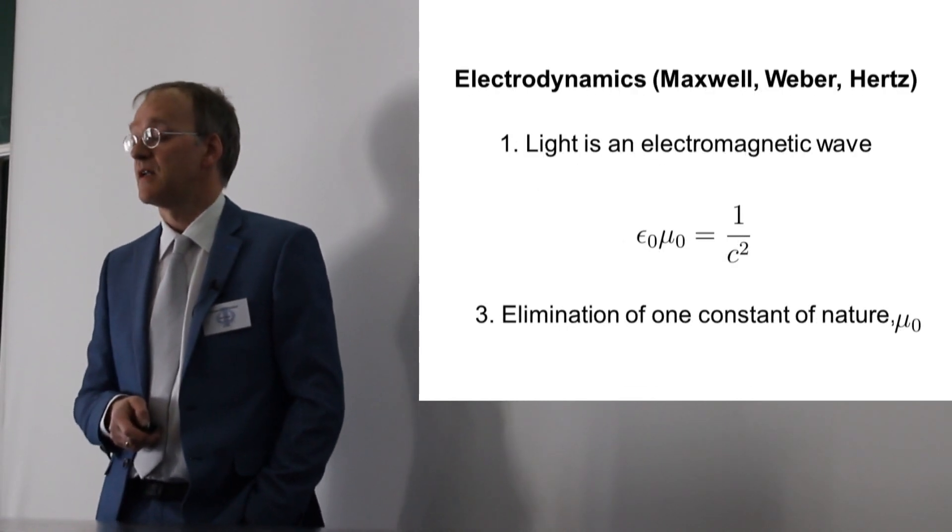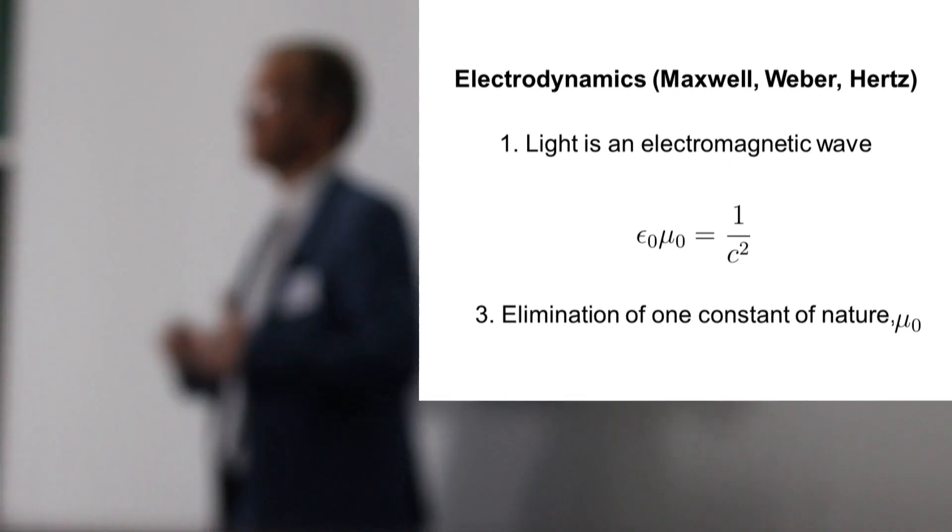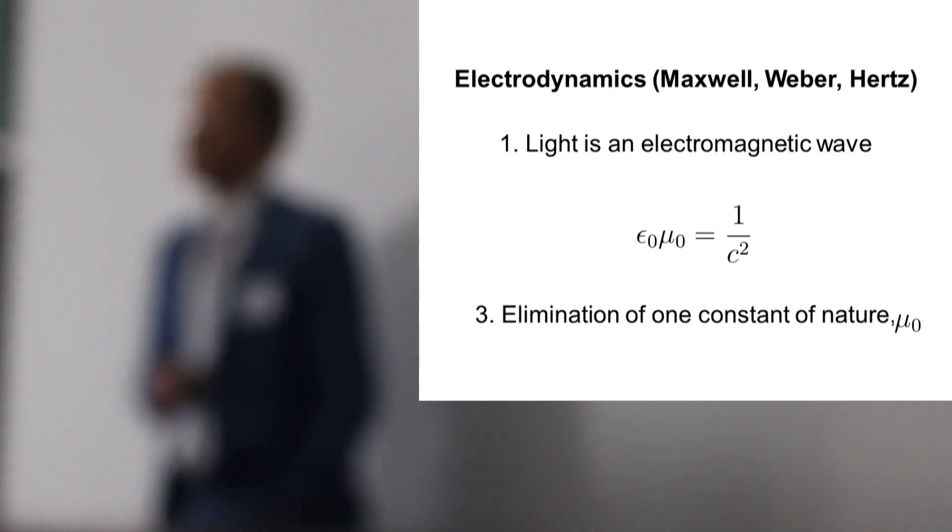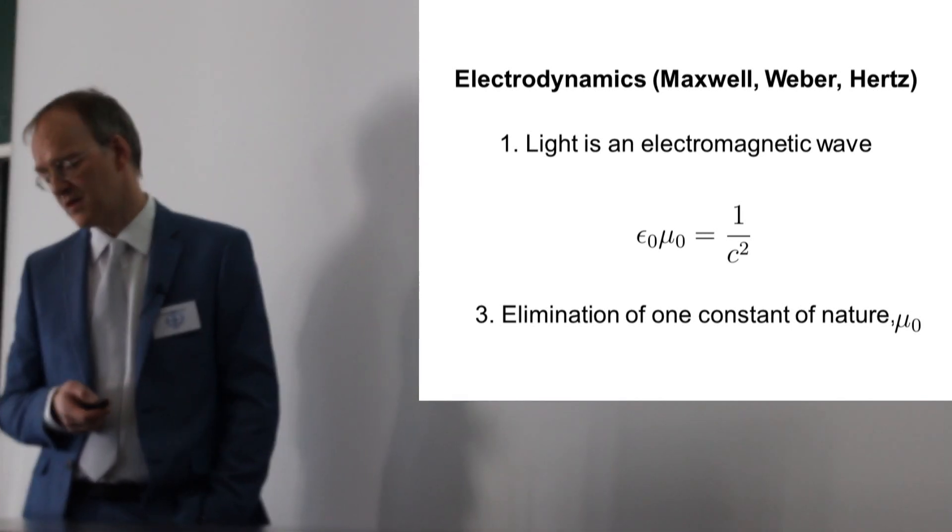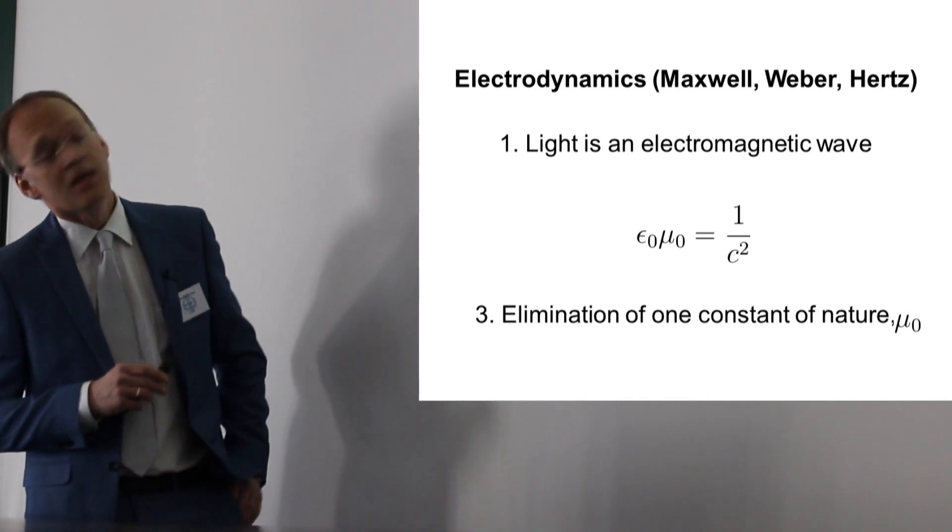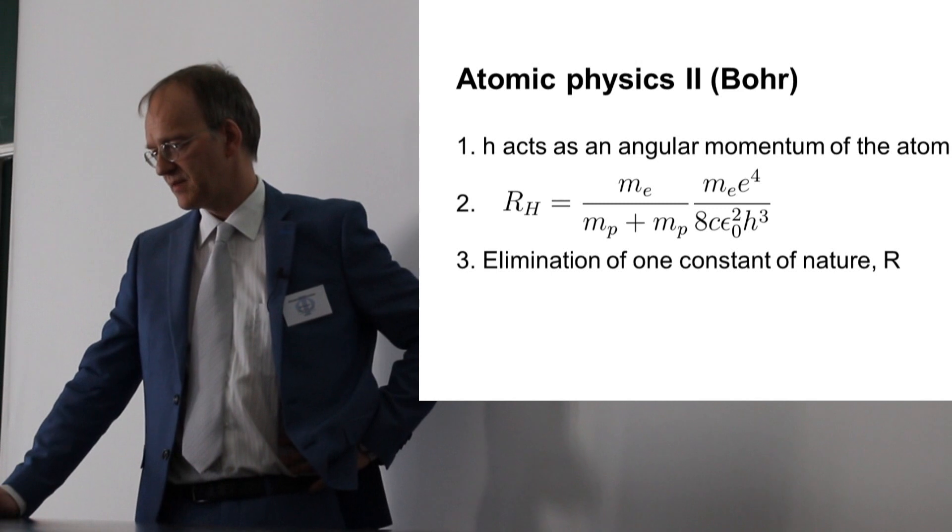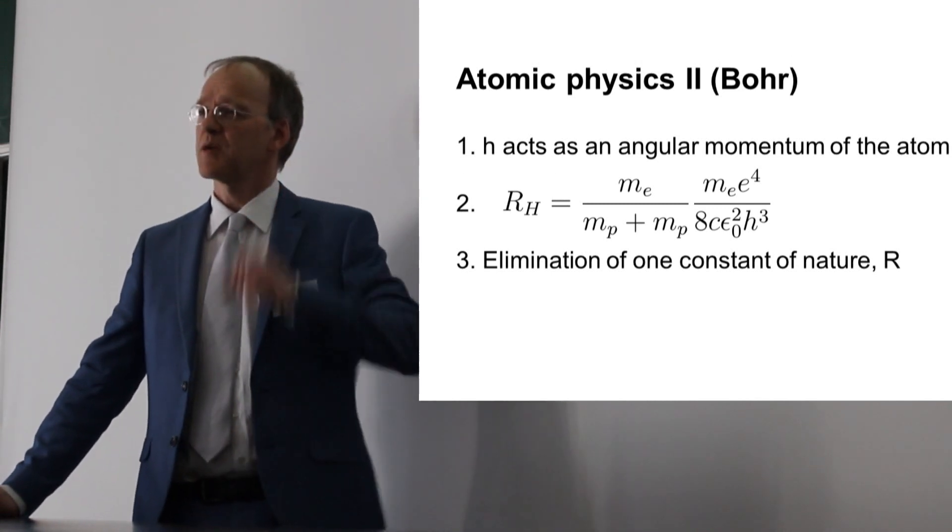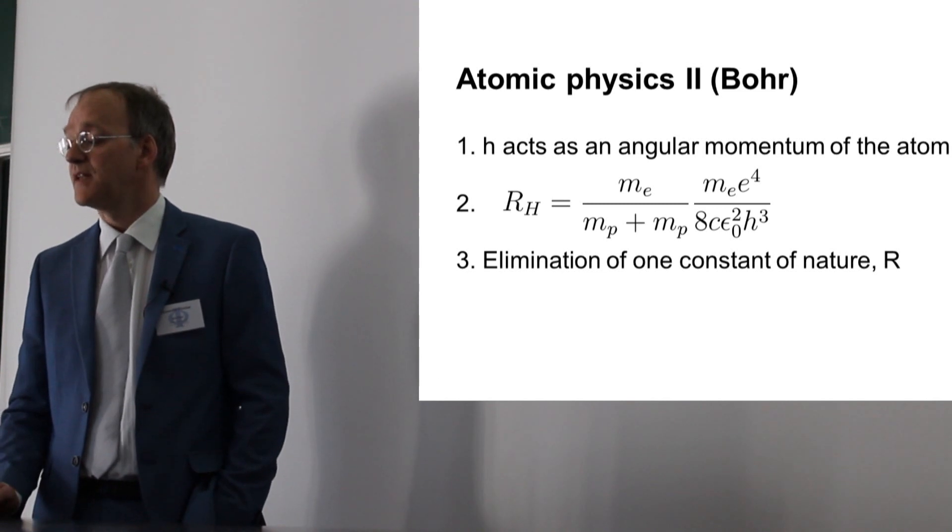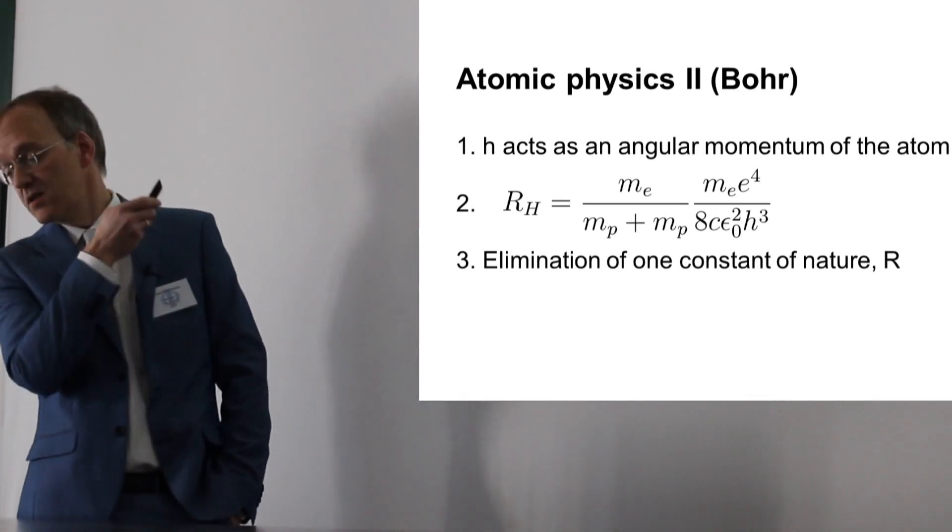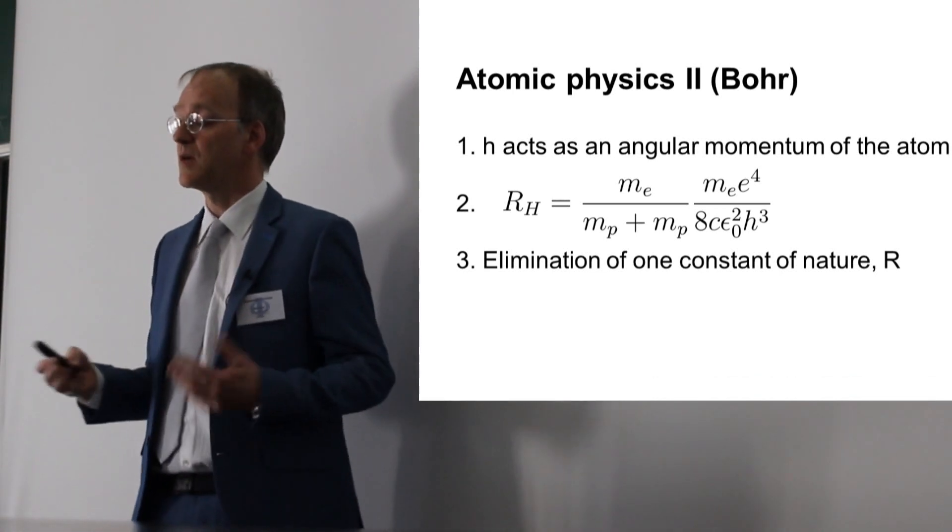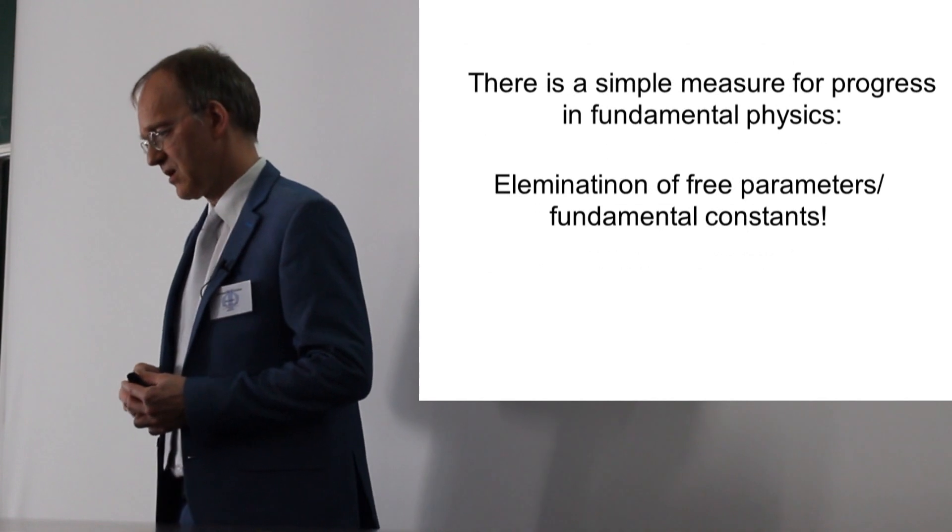Another example is light is an electromagnetic wave, a fantastic intuitive idea. If you do the mathematics with Maxwell equations, you end up with this revolutionizing equation. The electric and magnetic constants are related to the speed of light, and you end up with one constant less. What Bohr did was think about the constant h, that it might be an angular momentum in atomic physics. He worked it out, and at the very end, Rydberg's constant is not anymore fundamental. You end up with one constant less.